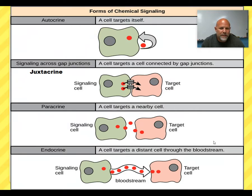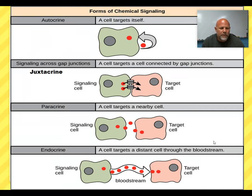Juxtacrine means I am an adjacent cell. In a juxtacrine situation, we can either be sending messages directly through channels that form between cells, or we can be in direct contact with another cell — maybe a receptor on the surface matching up to a molecule on the surface of another cell.